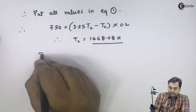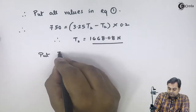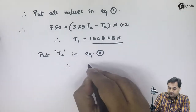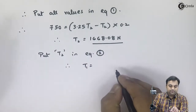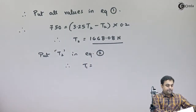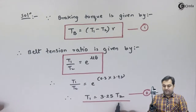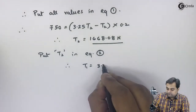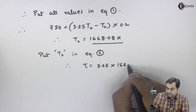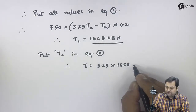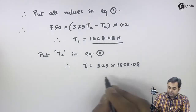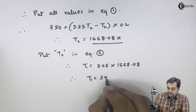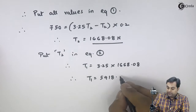Next, substituting T2 into equation two: T1 = 3.25 × T2 = 3.25 × 1668.08. Therefore T1 comes out to be 5418.08 Newton.